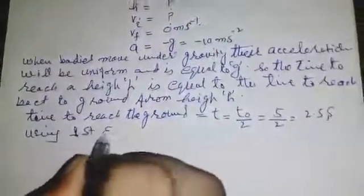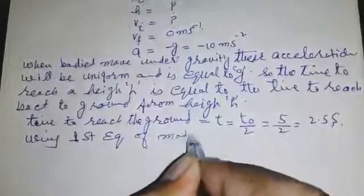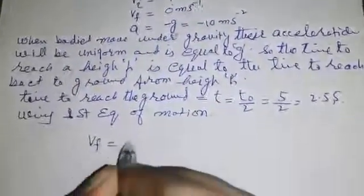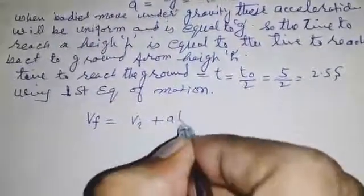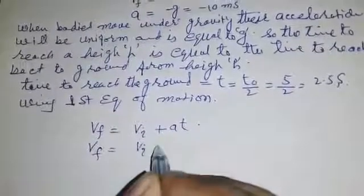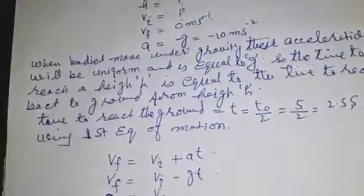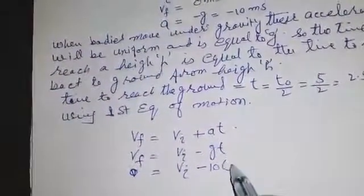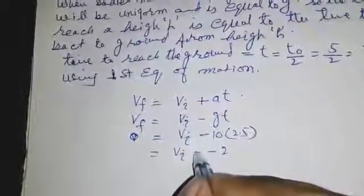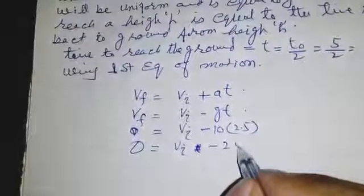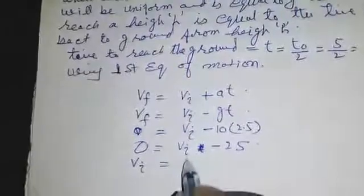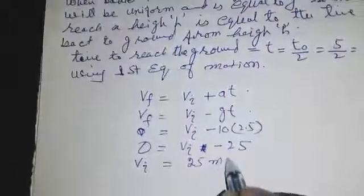Using first equation of motion: vf = vᵢ + at, vf = vᵢ - gt. 0 = vᵢ - 10(2.5). vᵢ = 25 meter per second.